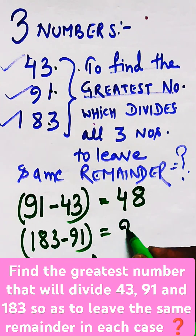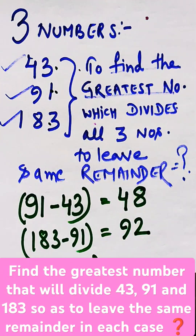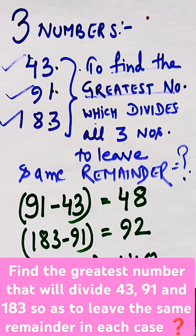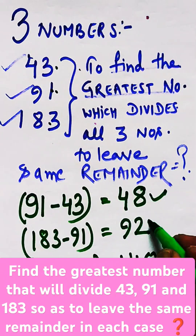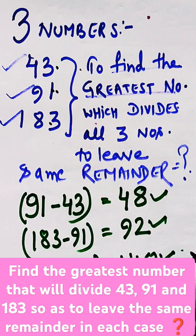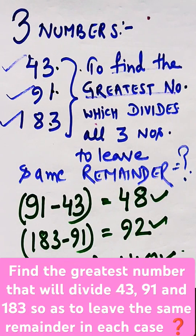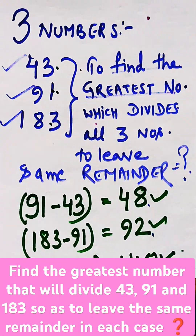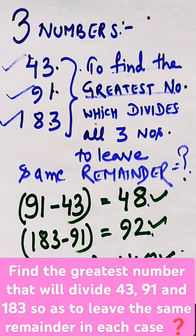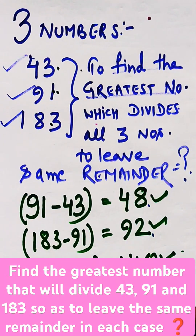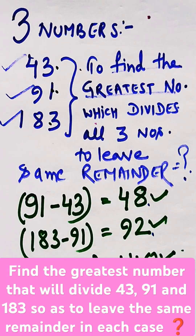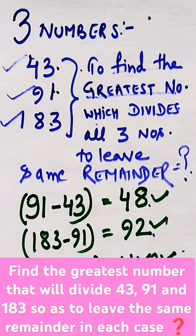When we subtract these numbers mutually, you will get three numbers: 48, 92, and 140. Now take the HCF of all these three numbers — 48, 92, and 140. That highest common factor will be the greatest number which divides 43, 91, and 183 to leave the same remainder. That is your answer.